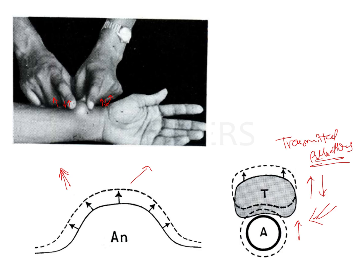Expansile pulsation is usually seen in swellings such as an aneurysm. An aneurysm is any weak point in the artery — if the artery wall has weakened at a section, that is where blood will start getting collected and a swelling will form. In such swellings, the entire aneurysm is going to feel the pulsation and rise and fall. The pulsations are being derived from within the swelling, not because it is adjacent to an artery. That is a type of expansile pulsation.